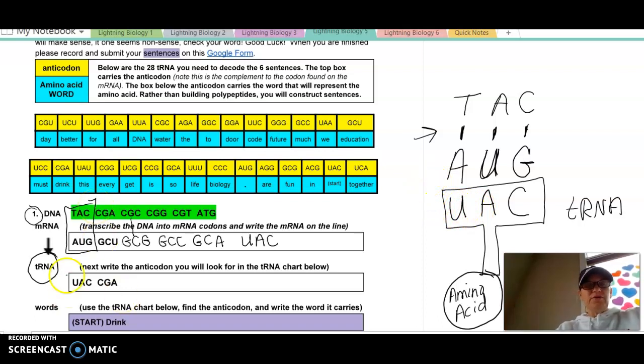And so this transfer RNA is just asking what would be the complement of the messenger RNA. And so as we go through, we see AUG would be UAC. So we write it here. GCU would be CGA. And we continue. I'm going to change the color. It'll be CGC. It'll be CGG. It'll be CGU. And the last would be AUG.